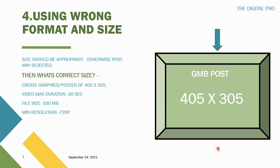The fourth common reason is using the wrong size or large files. Make sure your image is 405 by 305 pixels — some recommend 400 by 300, but I prefer 405 by 305. For videos, they should be no longer than 30 seconds, and the file size should not exceed 100 MB. The minimum resolution is 720 pixels. For image posts, use JPG or PNG — I prefer PNG, as it helps get your post published without rejection.